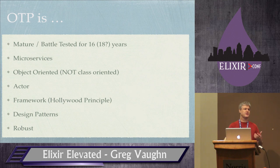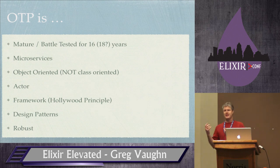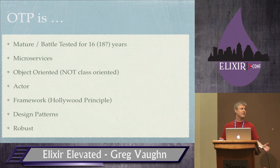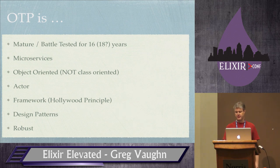OTP is robust. It has the answer to what happens if it fails, because it actually embraces failure — it's not an if, it's a when. If you scale large enough, it will fail at some point. Even if you write bug-free code, hardware and networking problems happen. So you have to be prepared for failure, and OTP makes it easy to separate the concerns of those two things.